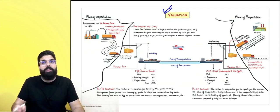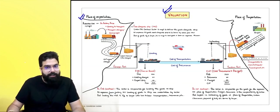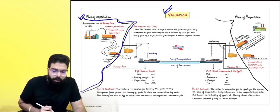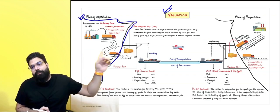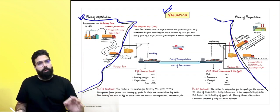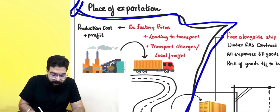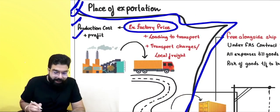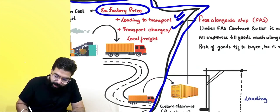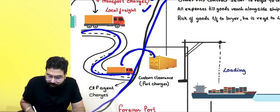Some basic things to know before understanding the chapter: if goods are coming from the US, we call it the place of exportation; if goods are coming to India, India becomes the place of importation. Production cost plus profit is the ex-factory price. Ex-factory price plus loading cost and local freight gives you FAS — free alongside the ship.